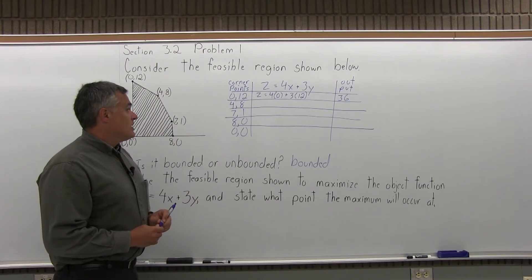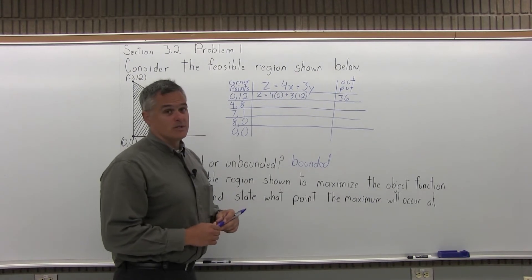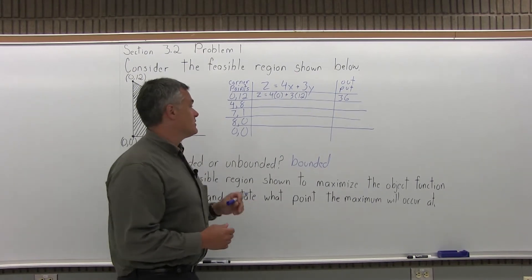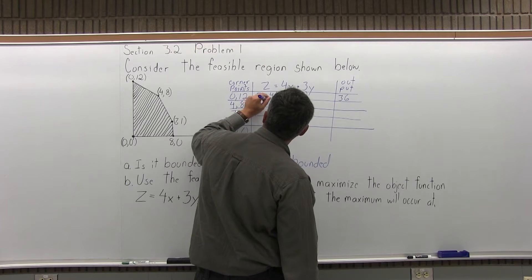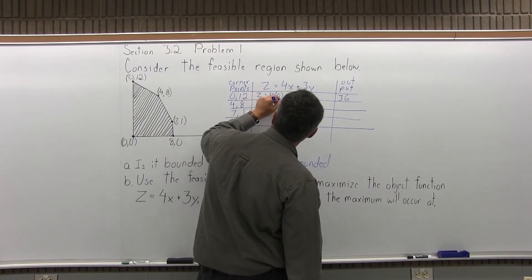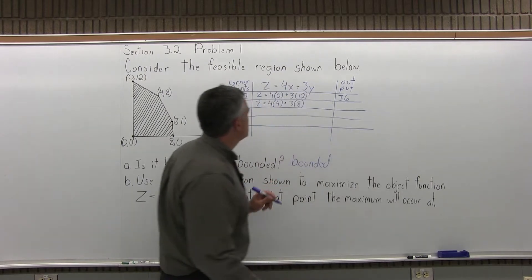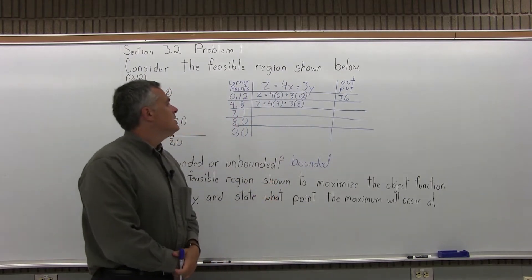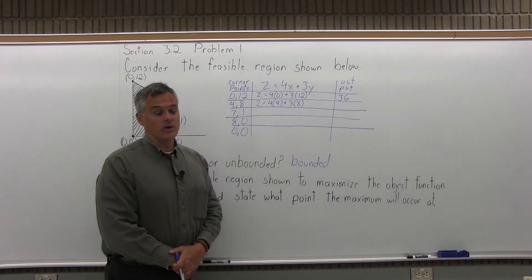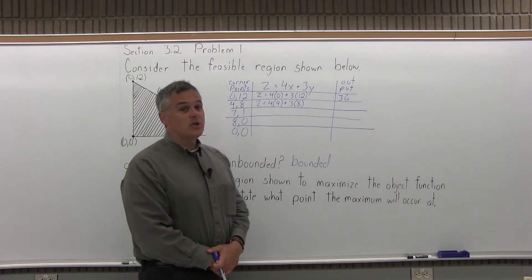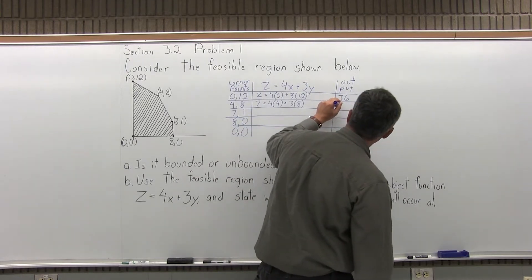The next corner point is (4,8), so x is 4 and y is 8. Put those into the object function: z equals 4 times 4 plus 3 times 8. So 4 times 4 is 16, 3 times 8 is 24, and 16 plus 24 gives an output of 40 at that corner point.